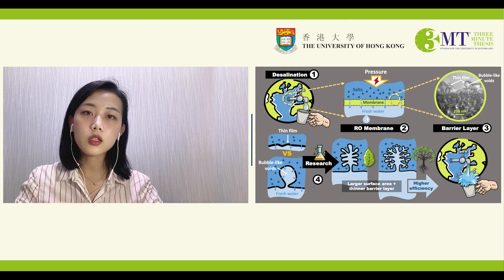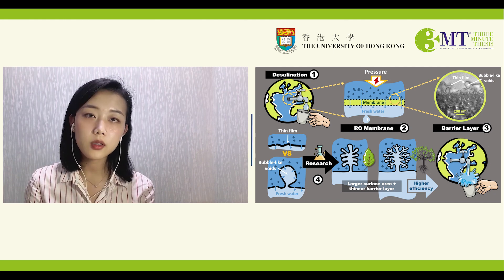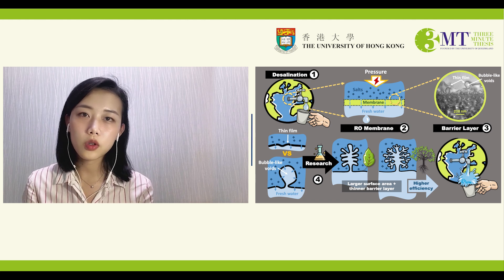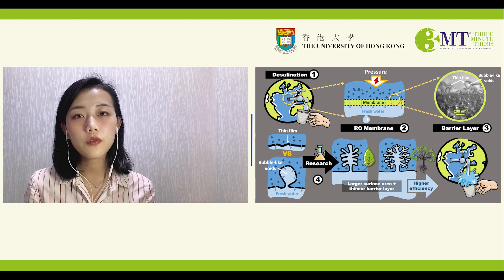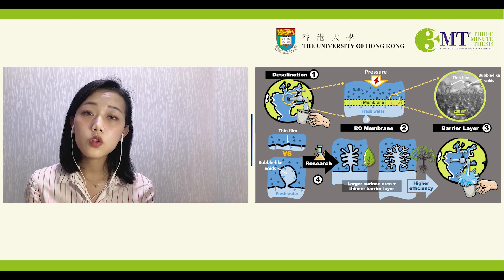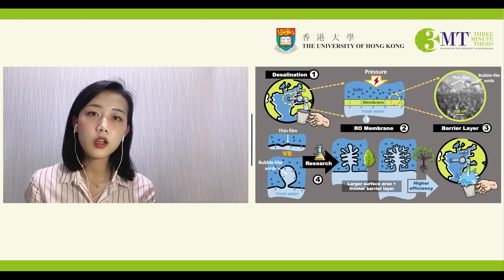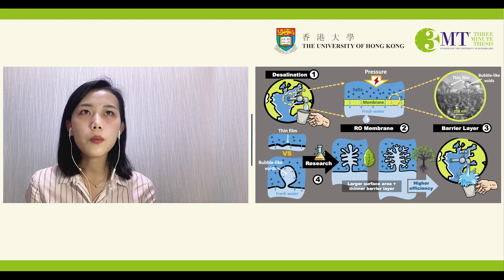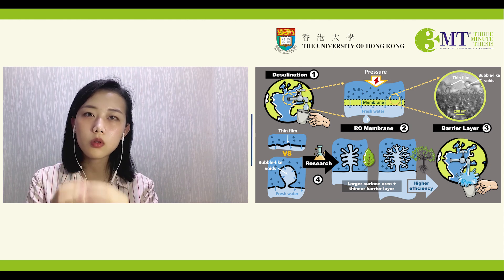During the membrane filtration, seawater is pressed onto the membrane, and salts will be retained — then we can gather fresh water from the output. The filtration function of the membrane comes entirely from the membrane surface. If you zoom in on the membrane surface under a microscope, you can see a barrier layer on the top, which consists of a thin film and voids underneath — just like something blowing up the film to make it swell like bubbles or balloons.